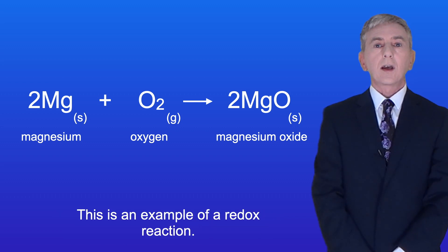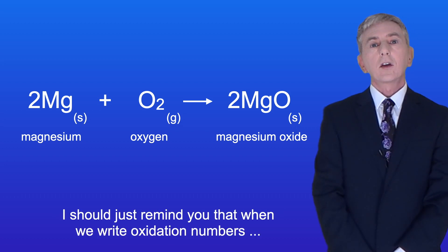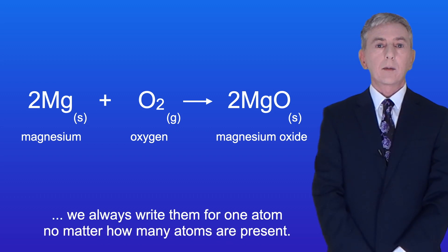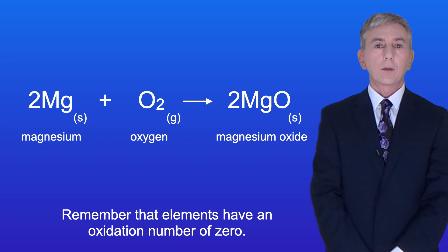Now this is an example of a redox reaction, and we can show that by using oxidation numbers. I should just remind you that when we write oxidation numbers, we always write them for one atom, no matter how many atoms are present. And remember that elements have an oxidation number of zero.